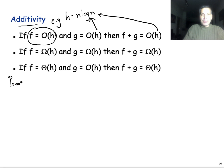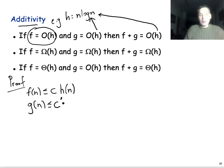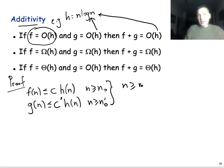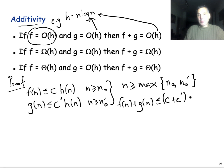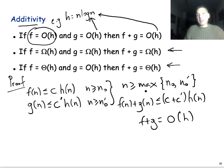The proof, again, is very simple. Given that f is Big O of h, we know that f(n) is upper bounded by c times h(n). We also know that g is upper bounded by some different constant c' times h(n). As long as n is greater than the max of n₀ and n₀', we have that f(n) plus g(n) is less than or equal to (c + c') times h(n), which shows that f plus g is Big O of h. The two other properties for Big Omega and Big Theta are very similar, again based on the definition.